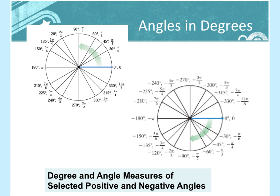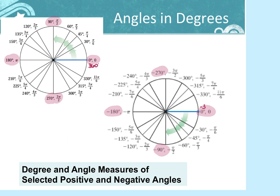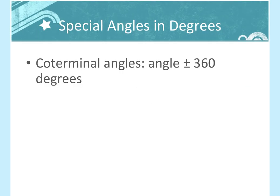Everything we talked about in radians, we now do in degrees. 0 is on the right, 90 at the top, 180 on the left, 270 on the bottom, then back to 360. Going in the negative direction: negative 90 on the bottom, negative 180 on the left, negative 270 at the top, back to negative 360. To find coterminal angles in degrees, instead of adding 2π we add 360 degrees, and instead of subtracting 2π we subtract 360 degrees.